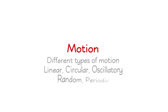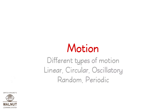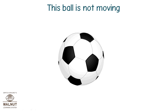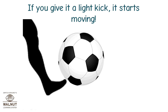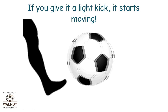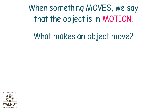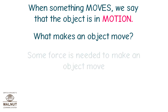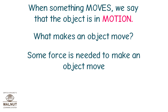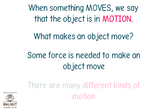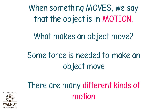Motion — different types of motion: linear, circular, oscillatory, random, periodic. This ball is not moving; if you give it a light kick, it starts moving. When something moves, we say that the object is in motion. What makes an object move? Some force is needed to make an object move. There are many different kinds of motion.